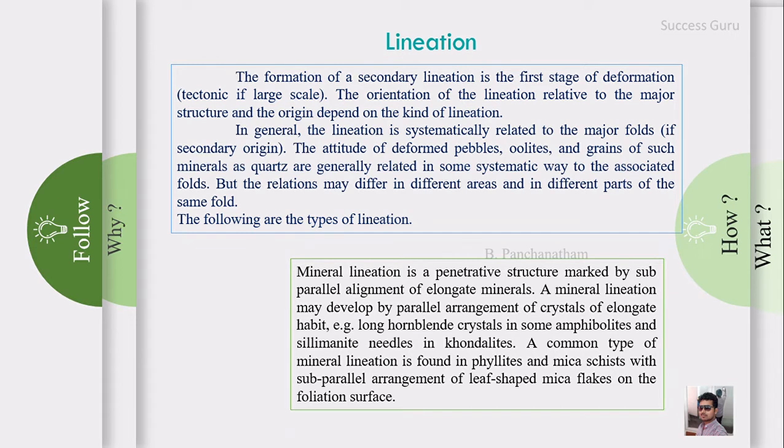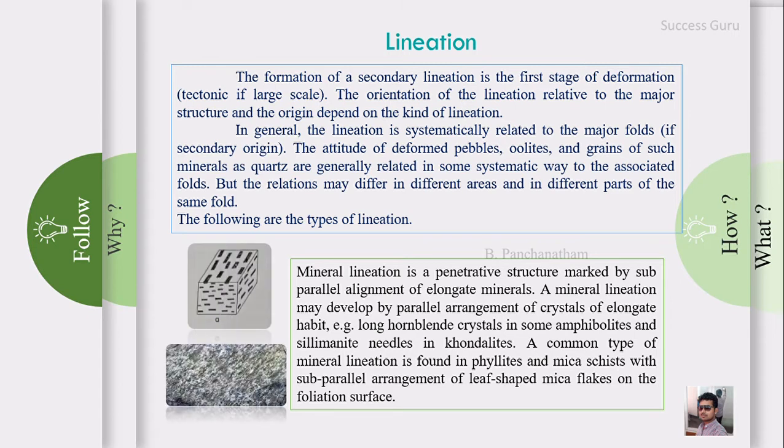Mineral lineation is the first type. It is a penetrative structure marked by subparallel alignment of elongated minerals. Mineral lineation may be developed by parallel arrangement of elongate habit crystals, like long hornblende crystals in some amphibolites and streamlined needles in schists. A common type of mineral lineation is found in phyllites and mica schists with subparallel arrangement of leaf-shaped mica flakes on the foliated surface. This is probably the first stage of deformation, showing that there is an action of external stress, and the minerals have been lineated according to the stress direction.